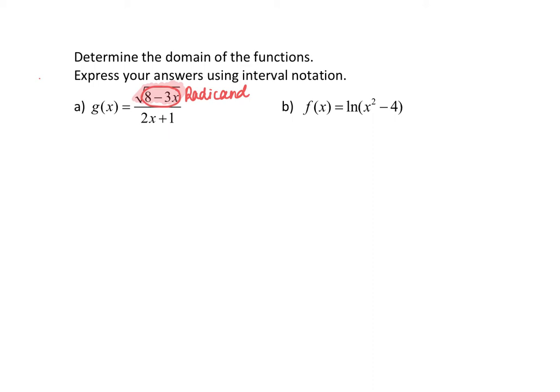What is inside that square root must be positive or zero. That means the quantity 8 minus 3x must be greater than or equal to zero — it cannot be negative. So we're going to solve that inequality in just a second.